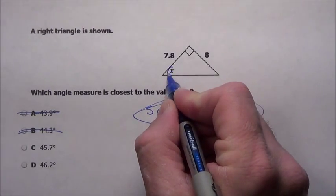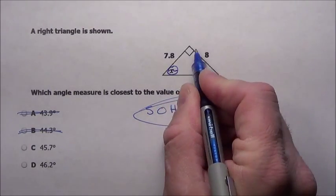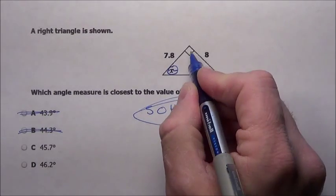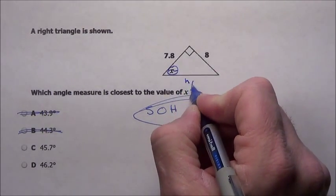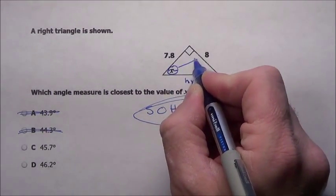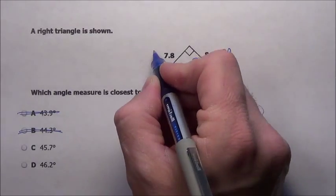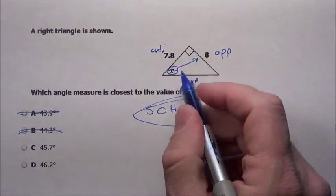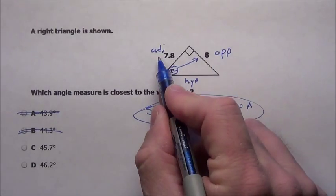What I have is I have theta here in a right triangle. Across from this, this is going to be my hypotenuse. That over there is going to be my opposite. And this right here is going to be my adjacent. So I have opposite and adjacent.